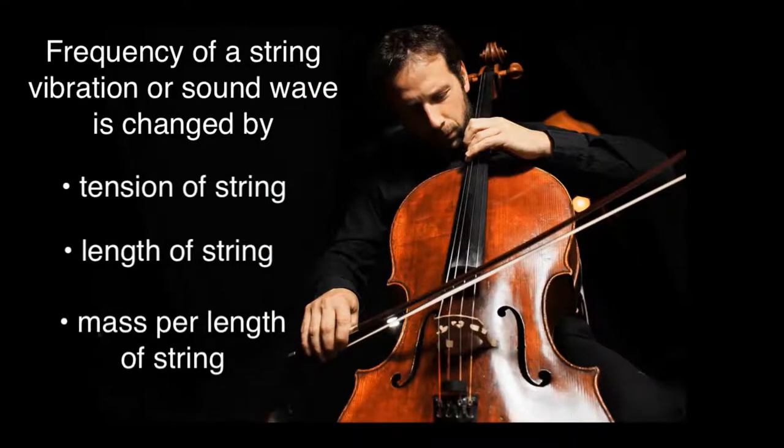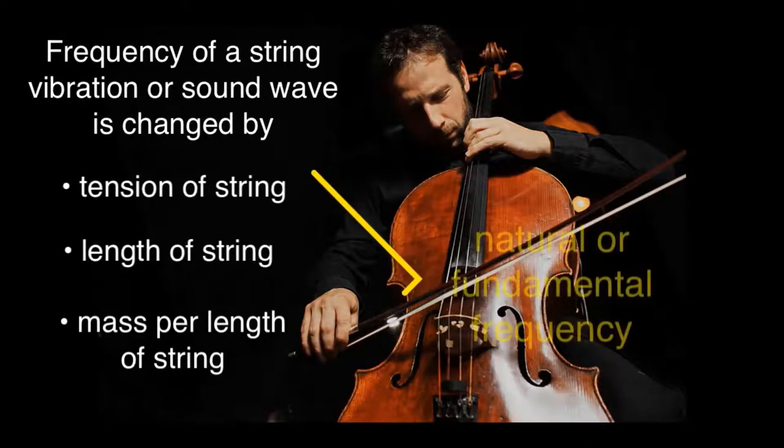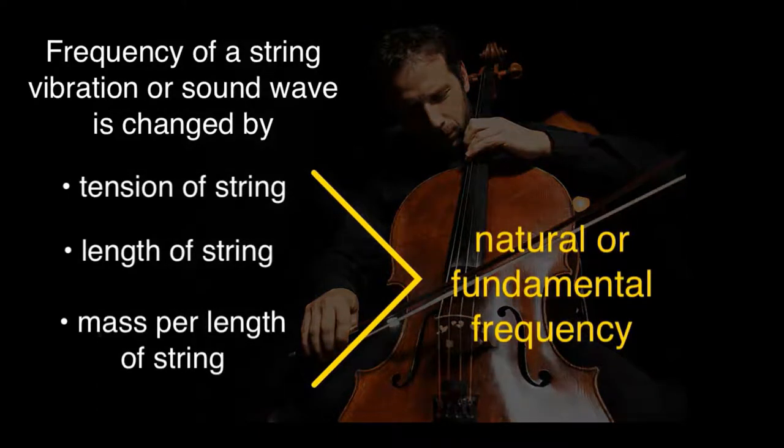You can get the same frequency from a string by plucking it or bowing it with different techniques. This frequency is called the string's natural frequency. That a taut string fixed at two ends of given length and mass generates a particular natural frequency is due to the creation of standing waves.